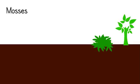Speaking of roots, mosses technically don't have roots because they don't have a vascular system. They don't have a xylem or phloem. This means that they don't have true roots or shoots.